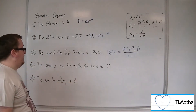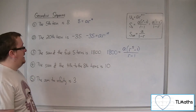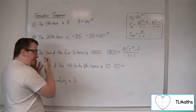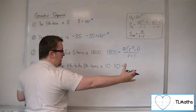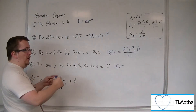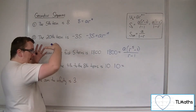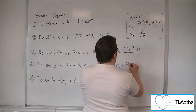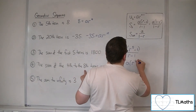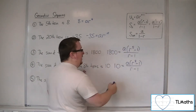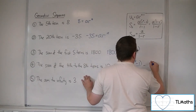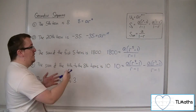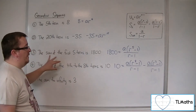Then the sum of the fourth to the eighth terms — taking that as inclusive — is 10. So from the first to the eighth terms, I don't want the first three terms because I want from the fourth to the eighth inclusive. So I need to take S3 from S8. S8 would be a times r to the 8 minus 1 over r minus 1, and I take away the sum of the first three terms: a times r to the 3 minus 1 over r minus 1. That would be the equation from that bit of information.